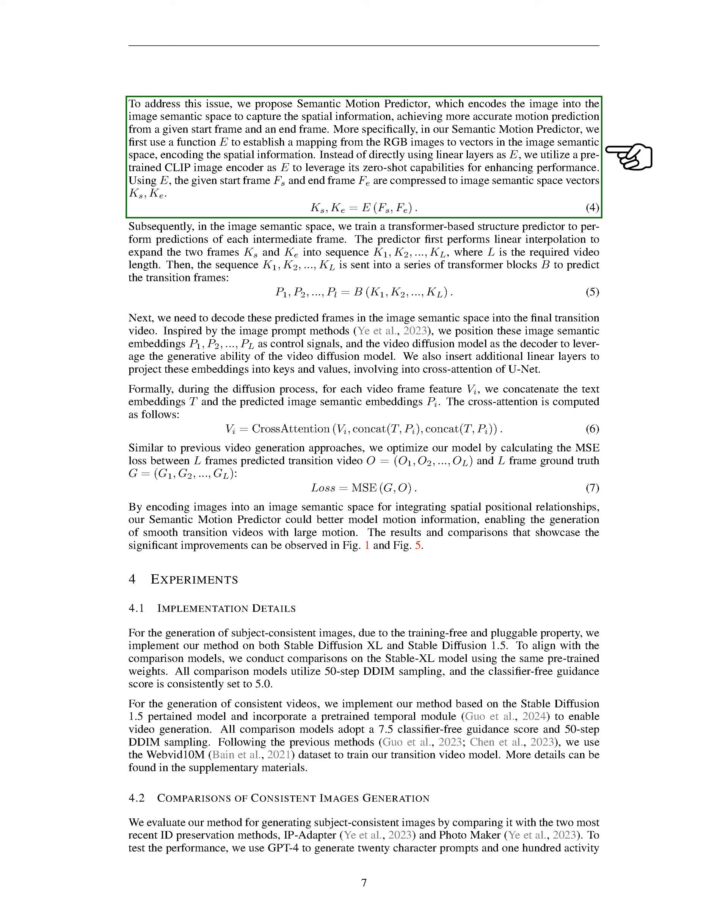By applying E, the start frame F_S and end frame F_E are transformed into image semantic space vectors K_S and K_E. We then use a transformer-based structure predictor in the image semantic space to predict each intermediate frame. This predictor first expands the two frames K_S and K_E into a sequence K_1, K_2, ..., K_L using linear interpolation, where L is the desired video length. This sequence is then fed into a series of transformer blocks B to predict the transition frames.